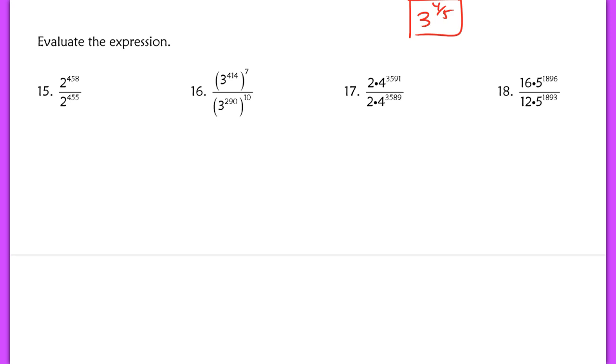Now for 15 through 18, these look like they're really tough to do without a calculator, but you're going to be able to evaluate these just using your basic exponent properties. So in number 15 here, we are evaluating 2⁴⁵⁸ over 2⁴⁵⁵. Well, this is simply subtracting these exponents because we have the same base, so we're left with 2³. That's pretty straightforward.